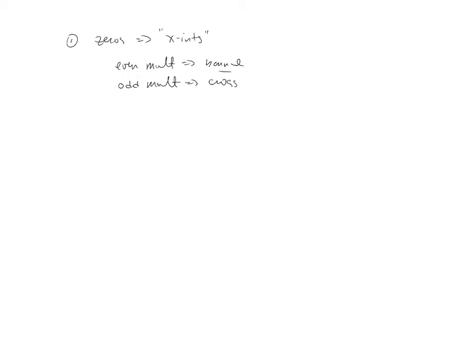So, bouncing and crossing at the x-intercept. The second step in graphing polynomials would be to identify the y-intercept. And if you'll remember to find a y-intercept, this is where we let x equal zero, and we solve for y.